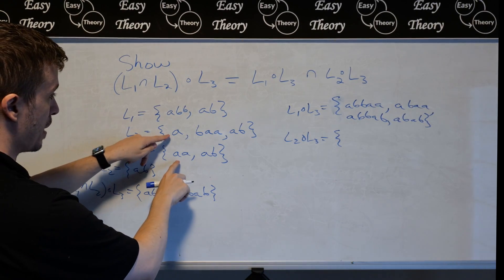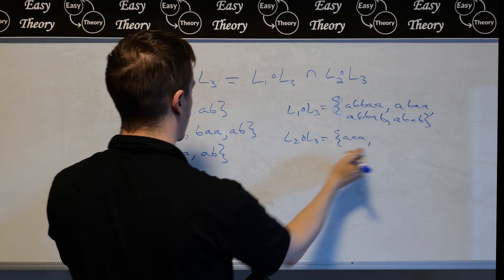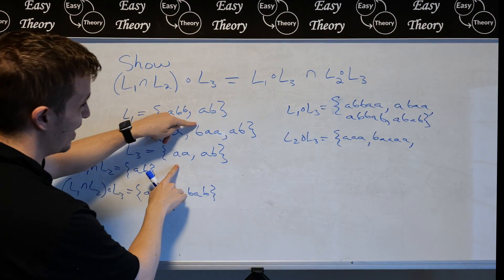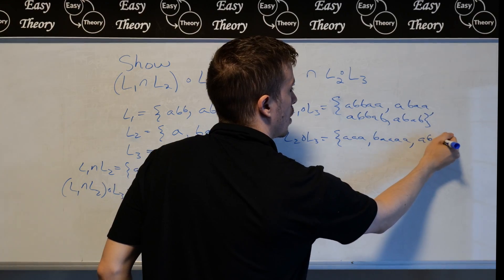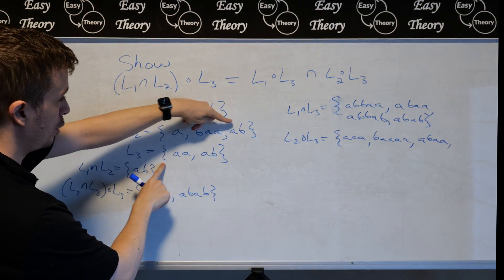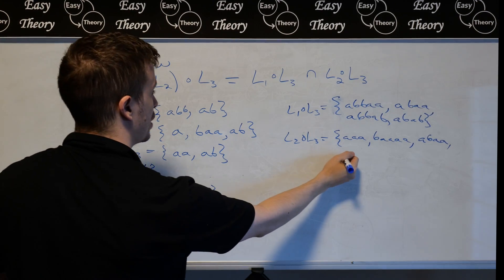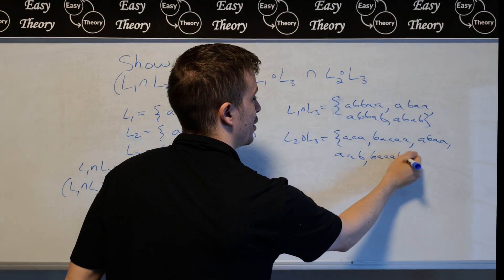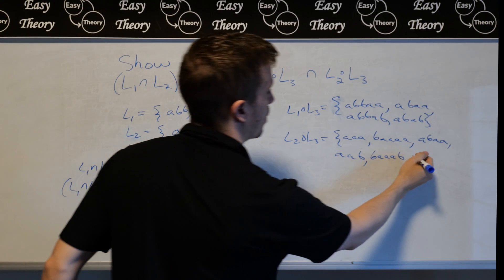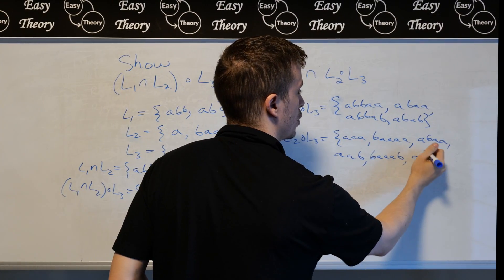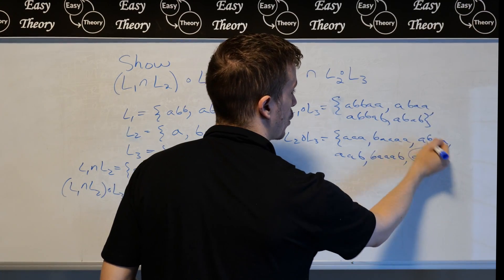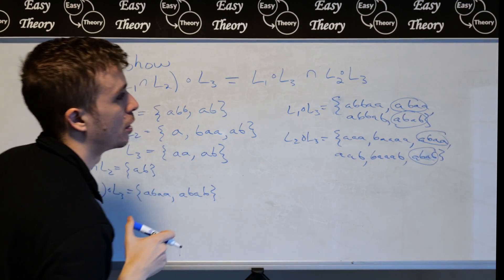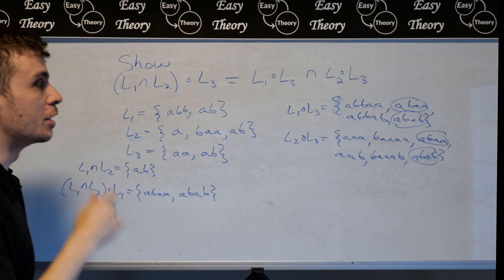Then L2 concatenated with L3: that's going to be AAA, then B·AA·AA, then AB·AA — that's what we should expect to see. And then the next pair gives us AAB, then BAB, and then ABAB. So then these two results from the left-hand side are indeed in common between the two sets, and none of the extra elements appear on the other side.